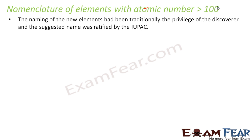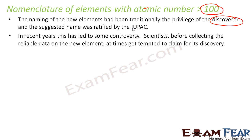Let's start with nomenclature of elements with atomic number above 100. Elements with atomic number above 100 are generally discovered in the labs, and the names of these new elements were based on the discoverer. The discoverers generally used to give their names, and this name was finally suggested by IUPAC. This was the tradition where the discoverers recommend a name and then IUPAC used to ratify it.